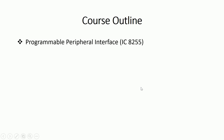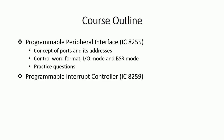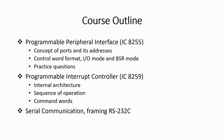Hello students, today we are going to start with Unit 7, that is Interfacing Chips. In this unit we will cover the following topics: starting with Programmable Peripheral Interface that is IC8255, where we will touch upon the concept of ports and addresses, the various IO modes, the control word format, and the Bit Set Reset mode, also called BSR mode. Thereafter we'll do some practice questions related to IC8255, then we'll cover the Programmable Interrupt Controller IC8259, its internal architecture, sequence of operation, and command words. After that we'll move to serial communication and understand framing with respect to RS232C.